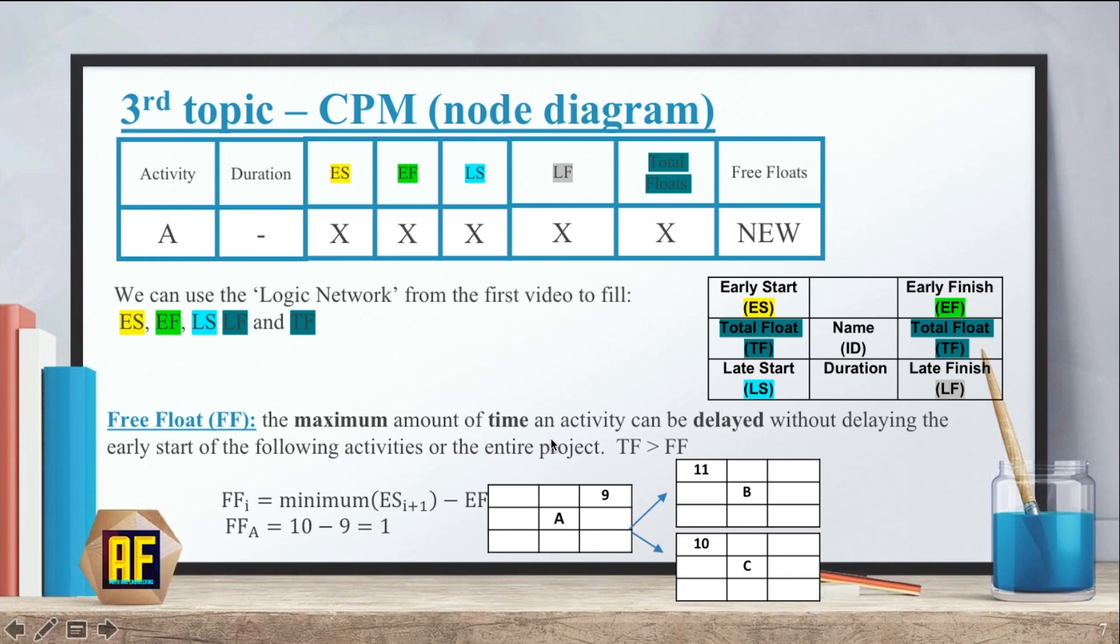The free floats is the maximum amount of time an activity can be delayed without delaying the early start of the following activities or the entire project. Your total floats should be bigger than your free floats. So our equation was free floats for an activity equals the minimum early start of the next activity minus the early finish of the activity discussed. So for example, if I have A, B and C, and I want to calculate the free floats for A, I'm saying the minimum ES plus one, the minimum of ESB and ESC - we have 11 and 10, so the minimum means the smaller of the two, which is 10, minus the EF of A, which is nine, gives us one.